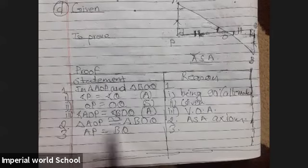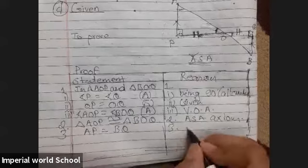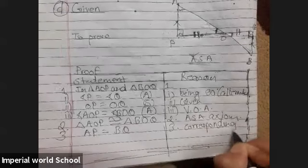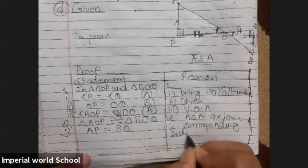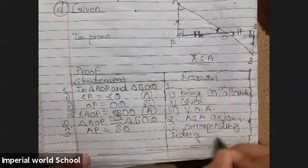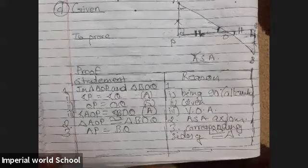The reason is? Do you remember what should be the reason when two sides become equal after proving any two triangle congruent? Corresponding sides of congruent triangle. Always we write like this. So, it's nothing new. Corresponding sides of congruent triangle. So, in this way, we put the theorem.